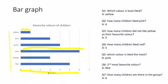How many children did not like yellow as their favorite color? Only one child likes yellow, so the remaining number is five. How many children like red? Five children like red. Which color is liked the most? Pink color is liked the most.